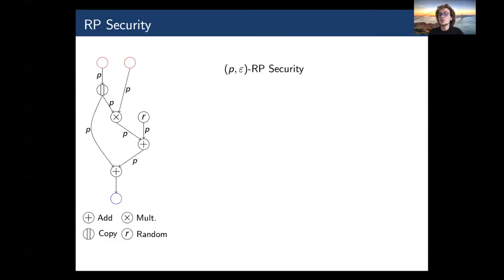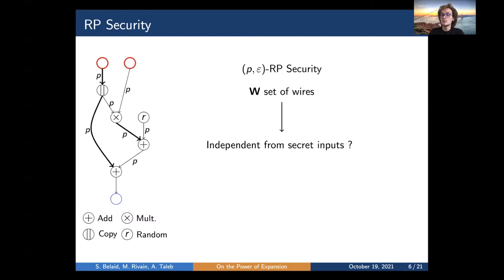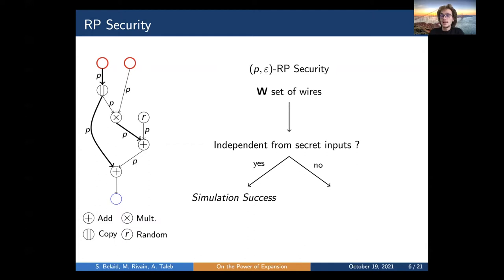To illustrate random probing security: on the left is a toy circuit with four types of gates. In the random probing model, each wire leaks with probability P, so we consider a set of leaking wires where each wire is added to the set with independent probability P. Considering each set of wires, we need to simulate the distributions of these wires without knowledge of the secret inputs — implying the wires are independent of the secrets. If this holds, we have a simulation success; otherwise a simulation failure, which should occur with probability epsilon. A circuit is said to be (P, epsilon) random probing secure if any set of leaking wires satisfies this condition.